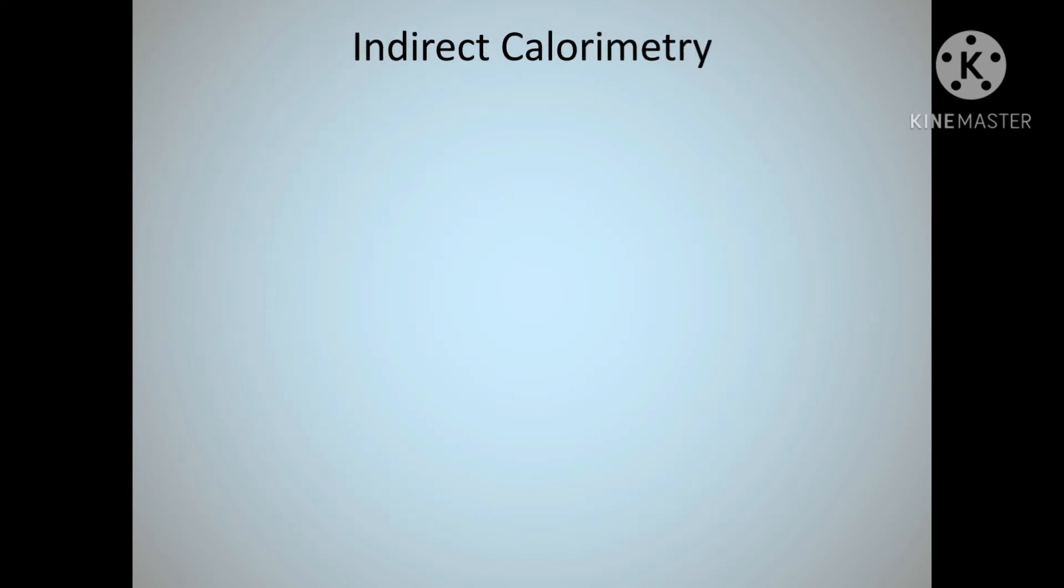Indirect calorimetry measures the amount of energy that you expend - it's trying to find out essentially how many calories you're burning. If you can work out how many calories you're burning during exercise, you can get your nutrition and calorie intake correct so you're not going to put on too much weight or start losing weight. If you get that wrong, for elite sports people who train so hard, the right amount of calories is crucial.